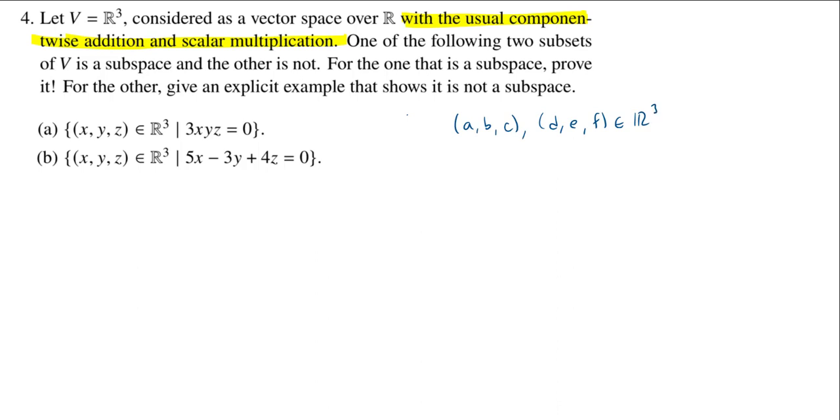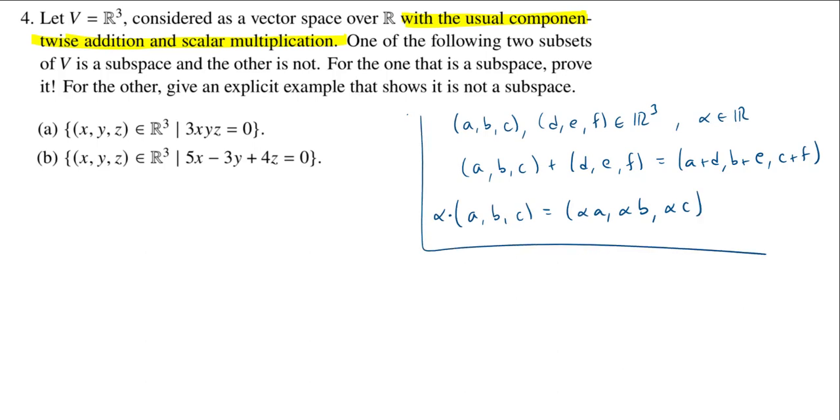Maybe it's handy to write down this usual component-wise addition and scalar multiplication. For example, if I have (a,b,c) in R³ as well as (d,e,f), I add them component-wise: (a+d, b+e, c+f). And if I multiply alpha by (a,b,c), this will be (αa, αb, αc). That is the background knowledge you need.